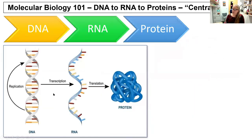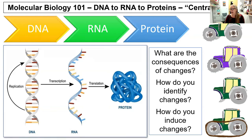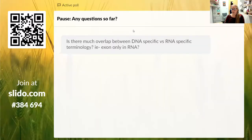At this point, hopefully it's clear that DNA makes RNA makes proteins. The process between DNA and RNA is transcription; the process between RNA and protein is translation. Now we're going to move on to: what are the consequences of changes to these macromolecules, how do you identify them, and how do you induce them? I'll continue to use the tractor analogy, but let me stop here to see if there are any questions.